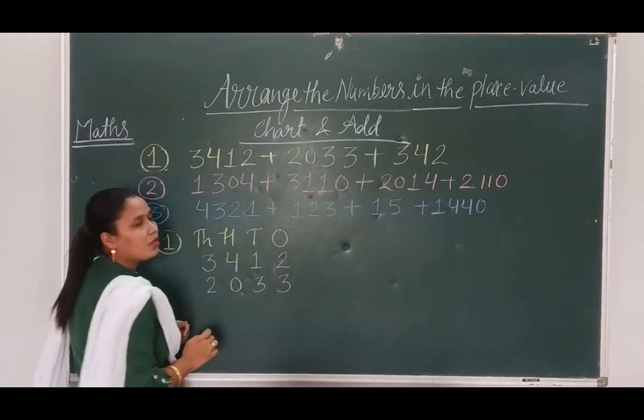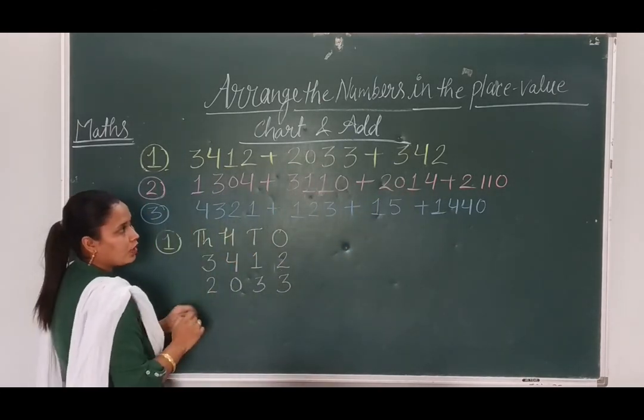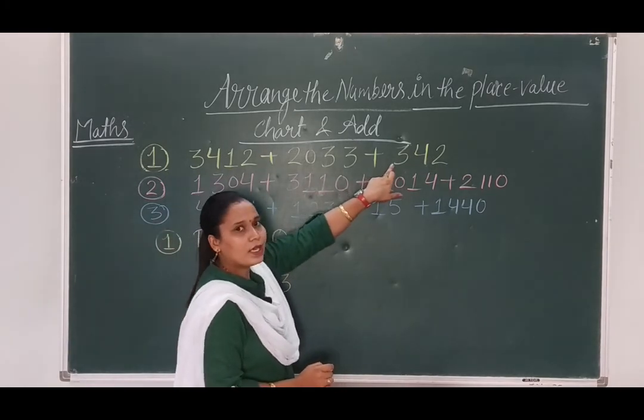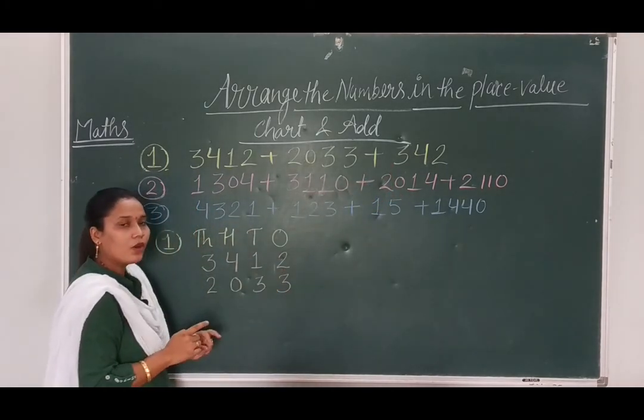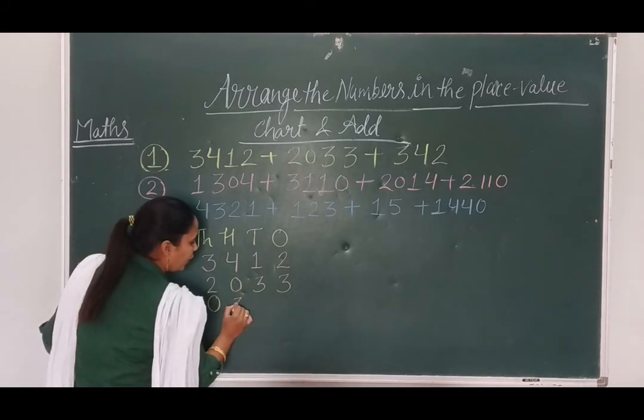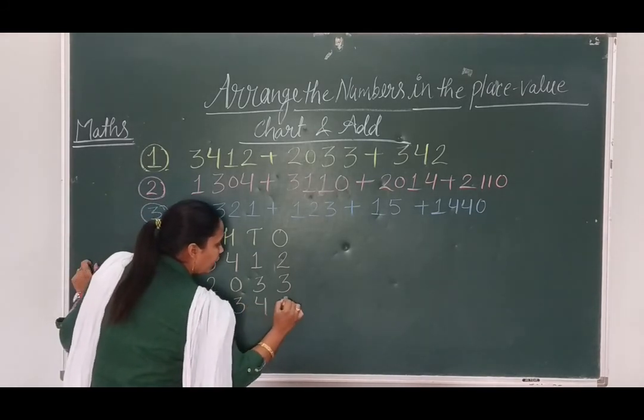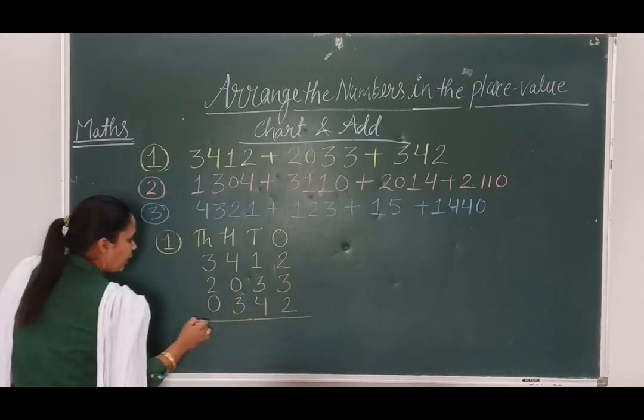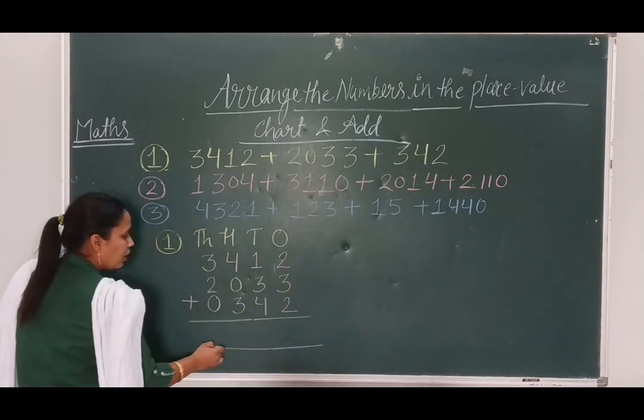Now, last one is 342. So, as we know, here 1000 place has not given. Then we have to put 0 at 1000 place. 0. Then, 342. Then we have to add this number.